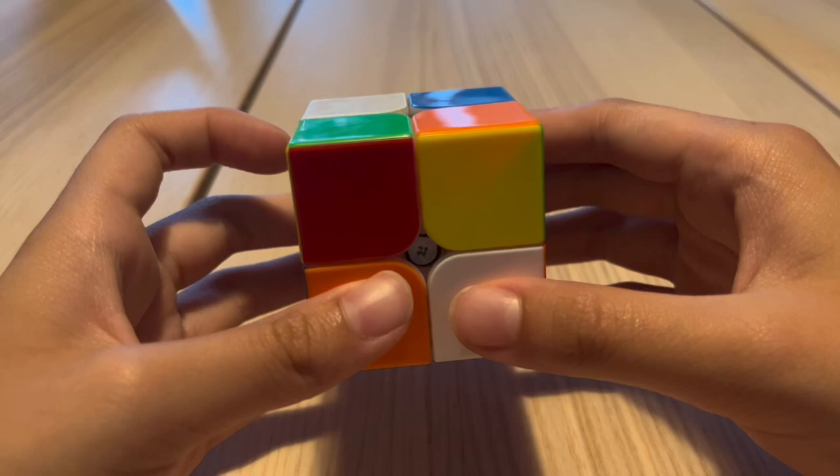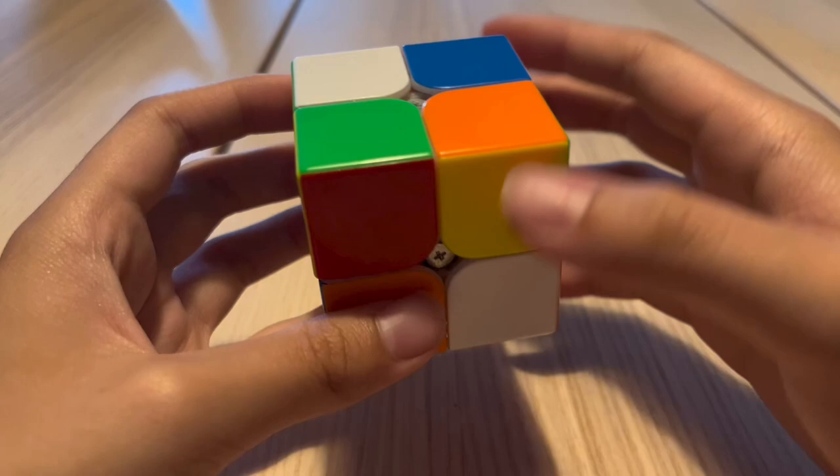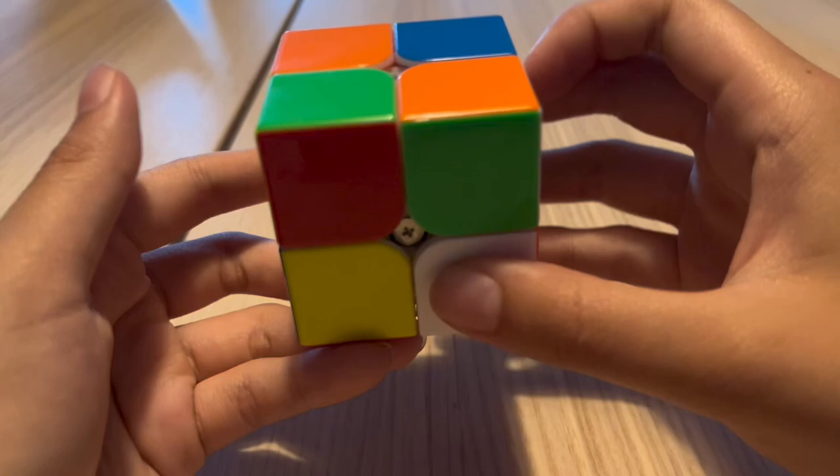This solve actually contained LS, which stands for last slot in 2x2. It can be seen here. So he starts off with R, U', R', F', R', F', this is a last slot case, just like that.